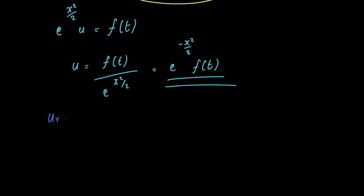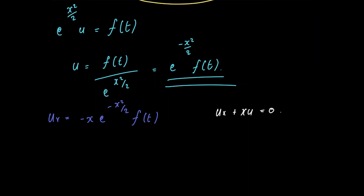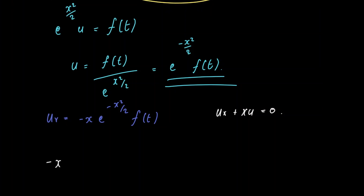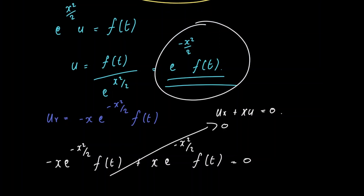The partial derivative of u with respect to x is equal to minus x times e raised to minus x squared divided by 2 times f of t. Our original PDE was the partial derivative of u with respect to x plus x multiplied by u equals 0. Plugging in our expressions, we get minus x e raised to minus x squared divided by 2 times f of t, plus x multiplied by e raised to minus x squared divided by 2 times f of t, and this equals 0. So our solution satisfies the partial differential equation.